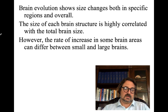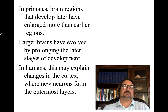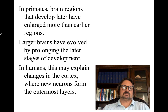Brain evolution shows size changes both in specific regions and overall, and the size of each brain structure is highly correlated with total brain size. However, the rate of increase in some brain areas can differ between small and large brains. In primates, brain regions that develop later have enlarged more than earlier regions. Larger brains have evolved by prolonging the final stages of development — for human beings, this is the prefrontal cortex, which is not fully online until about age 26.